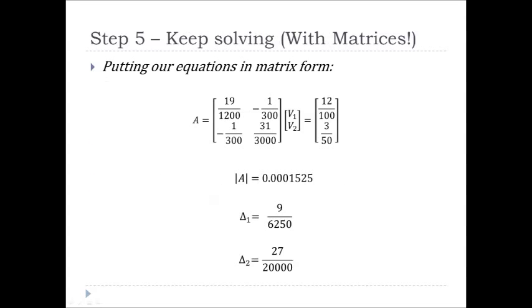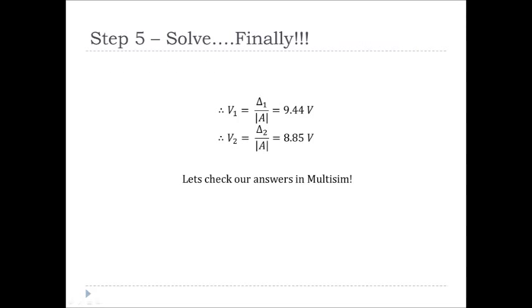So we can now put our equations into matrix form as shown by the augmented matrix here. We can calculate our determinant A bar and also the determinants delta 1 and delta 2 by using Kramer's rule. So we can now solve for our voltages V1 and V2.